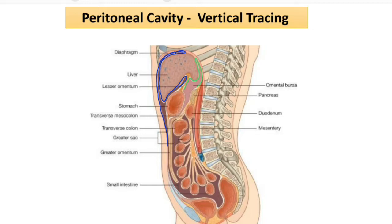These two layers will reflect from the porta hepatis — they are reflecting from the porta hepatis and going toward the stomach. The first layer will cover the stomach from the anterior side and the second layer will enclose the stomach from the posterior side.